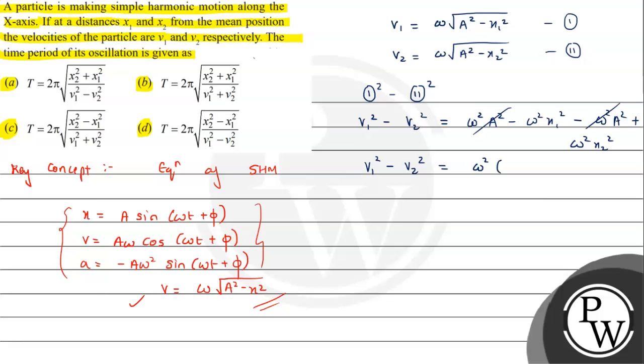Now we need the time period. We know that T = 2π/ω. From our derivation, ω² = (v1² - v2²)/(x2² - x1²), so ω = √[(v1² - v2²)/(x2² - x1²)]. Therefore, T = 2π/ω = 2π√[(x2² - x1²)/(v1² - v2²)]. This is the time period expression we are getting. If we analyze the options carefully...